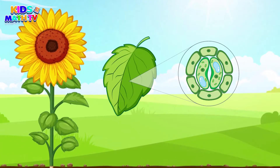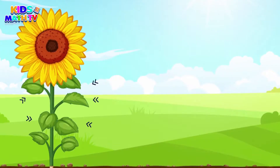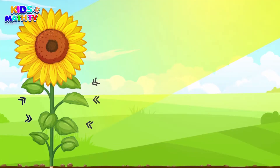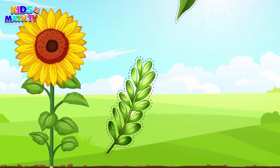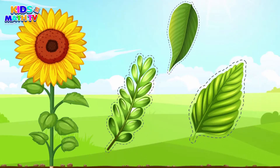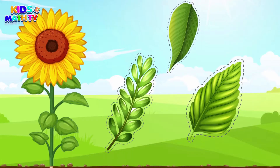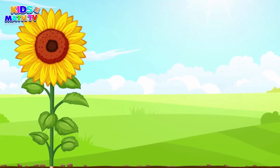Leaves are like the plant's lungs — they take in air and use sunlight to turn it into food for the plant. This process is called photosynthesis. Leaves come in many different shapes and sizes, and they are usually green, but they can also be red, yellow, or even purple.